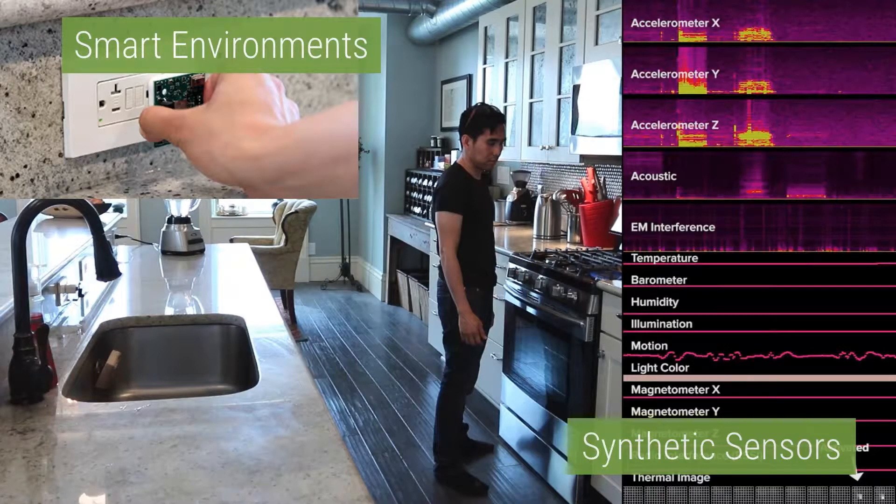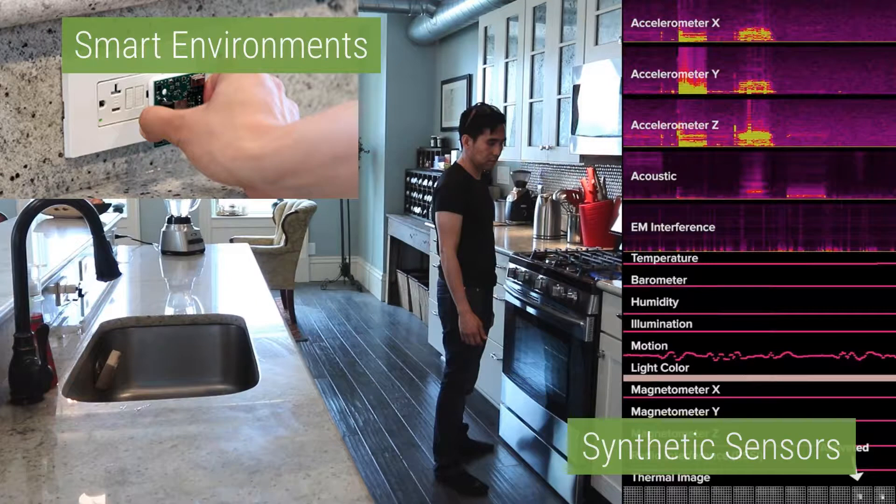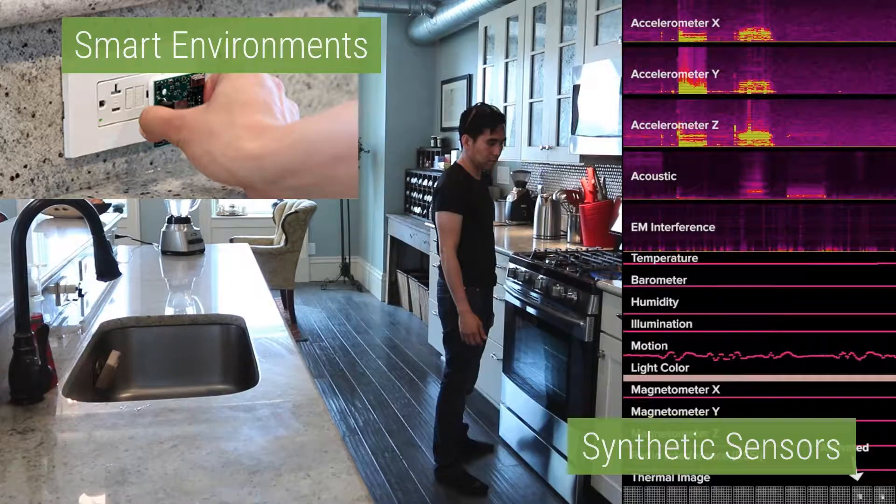We have also ventured into the space of smart environments. In this example of synthetic sensors, we explore the notion of general-purpose sensing, wherein a single highly capable sensor can indirectly monitor a large context without direct instrumentation of all the objects. As you can see in the top left corner, we have our sensory device, which is the synthetic sensor. It has a lot of sensors, such as accelerometers, microphones for sound and acoustic modeling, and motion sensors and magnetometers.